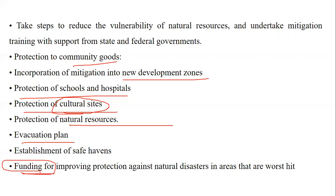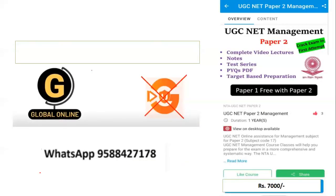On mitigation strategies, normally one question can be expected because in this unit, the majority of questions come from development goals, the Environmental Protection Act, and pollution. That is the reason this is a small topic but important to remember. Global Online also has Paper 2 for Management, Commerce, Economics, and Computer Science — if you are taking Paper 2 exclusively, Paper 1 is free. You can get in touch on the WhatsApp number, and once you have seen this video, go on the app for the mitigation strategies questions to assess how much you have understood. Thank you, everyone.